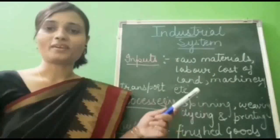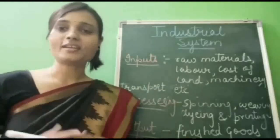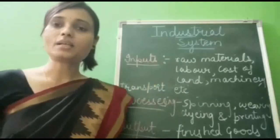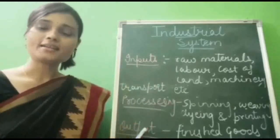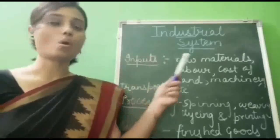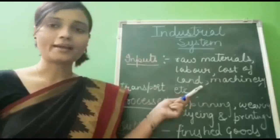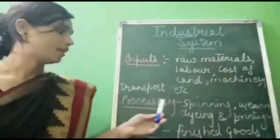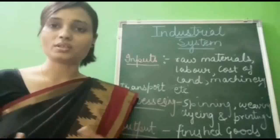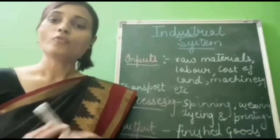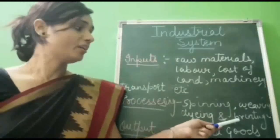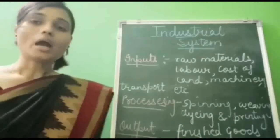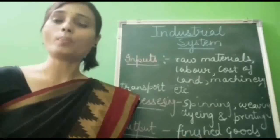Our next subtopic is industrial system. The functioning of an industry depends on a system known as the industrial system. This system consists of inputs, processing, and output. Inputs consist of raw materials, labor, cost of land, machinery, transport, and other infrastructure. Processing consists of a wide range of activities that change raw material into finished goods — for example, weaving, dyeing, printing, etc. Output is the finished good or the income obtained from it.